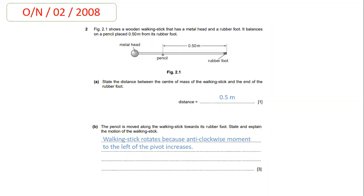In part B, the examiner asks you to state and explain what happens when the pencil is moved along the walking stick towards its rubber foot. When you move the pencil towards the rubber foot, the weight of the metal head acting downward produces an anti-clockwise moment about the pivot. The walking stick rotates because the anti-clockwise moment to the left of the pivot increases.